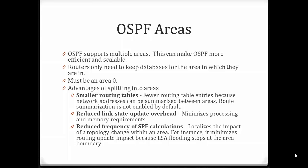OSPF areas have been mentioned a few times. In this class we will just talk about single-area OSPF, which will always be area zero, because we must have area zero. As you progress through the CCNA curriculum you will learn about multiple-area OSPF. Routers only need to keep databases for the area in which they reside. This leads to smaller routing tables, reduces link-state update overhead, and reduces the frequency of shortest-path-first calculations — so dividing OSPF routers into multiple areas can be a big advantage.